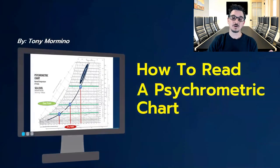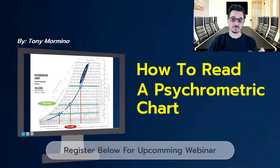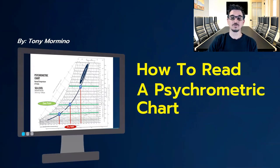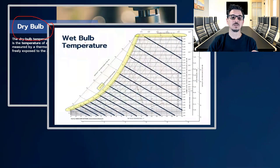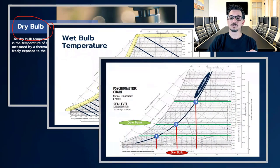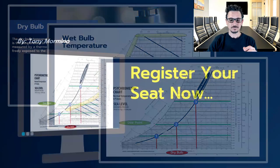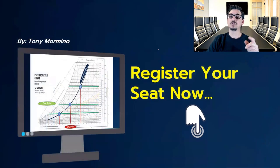These slides were taken from a webinar that we do called How to Read a Psychometric Chart. In this webinar we go through all the properties of air that are plotted on the chart. We show you how the chart is constructed in detail and we also review some psychometric processes. If this is of interest to you, you can click the link below and sign up for the webinar right now. It's free, just come and join us.